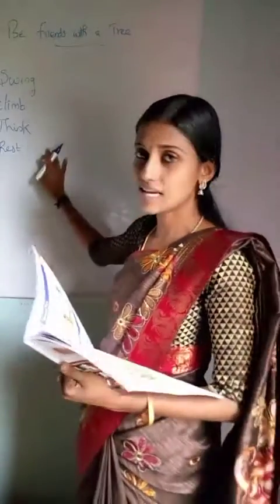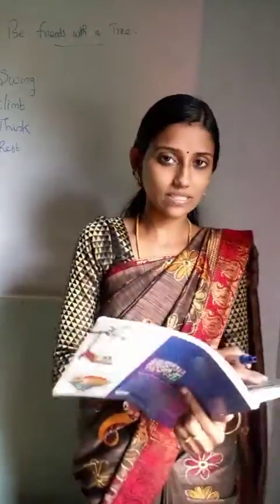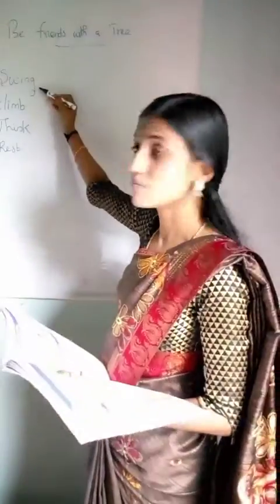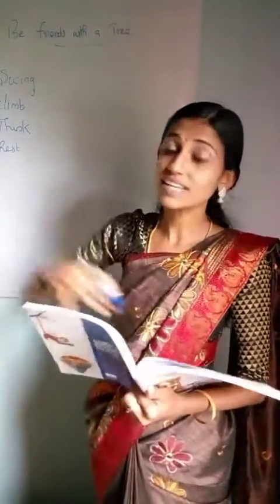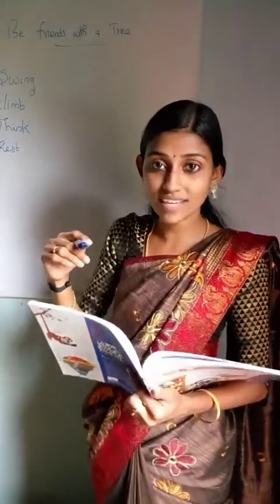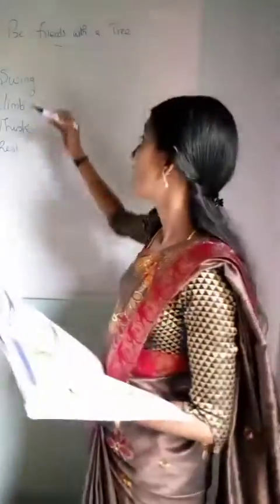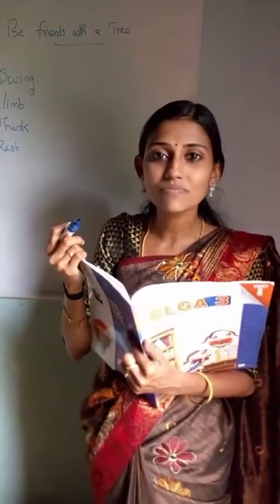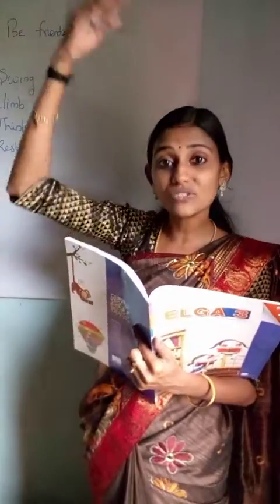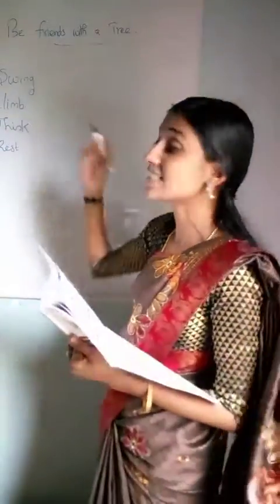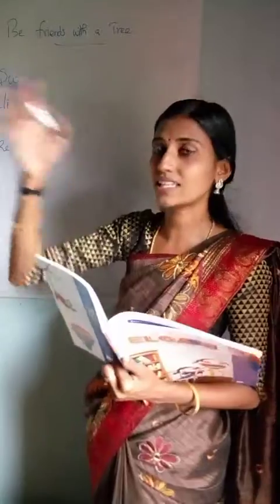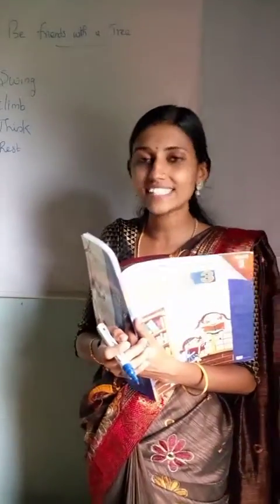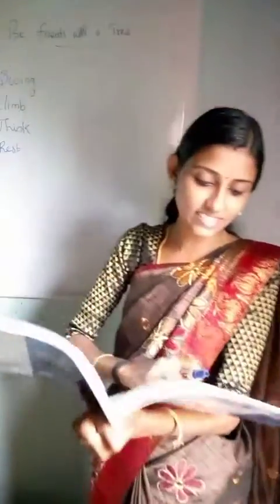These are some vocabulary words. You all know the meaning, right? Swing — in the park we can see swing, that is oonja. Next is climb — climbing means to climb up the tree. Next is think — thinking something. Next is rest — taking rest.